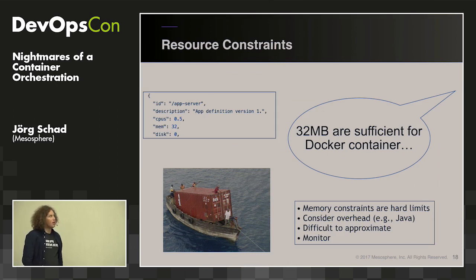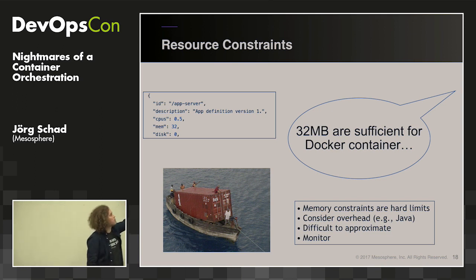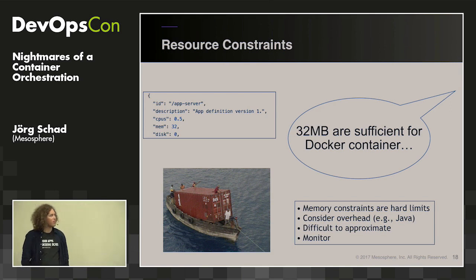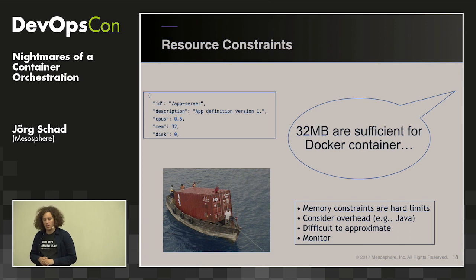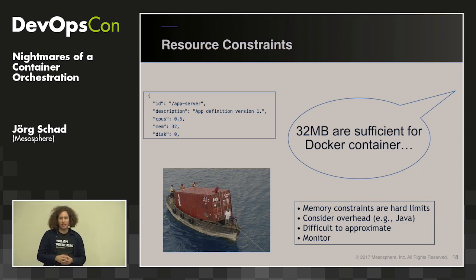Resource constraints: all container orchestration systems allow you to specify how many resources to allocate to your container, and this is really an art. Specifying 32 megabytes probably won't be sufficient for running a full container — it'll likely run OOM and be killed by cgroups. On the other hand, choosing 32 gigabytes is probably way too much. You need a healthy relationship in between.